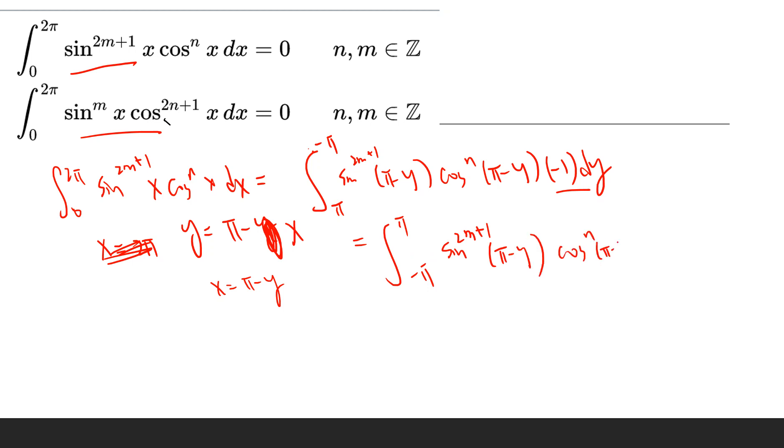So cosine π minus y is basically sine y, and sine π minus y is basically minus cosine y. Yeah, I think this is correct. So this is negative π to π, sine 2n plus 1 y, cosine y, dy.